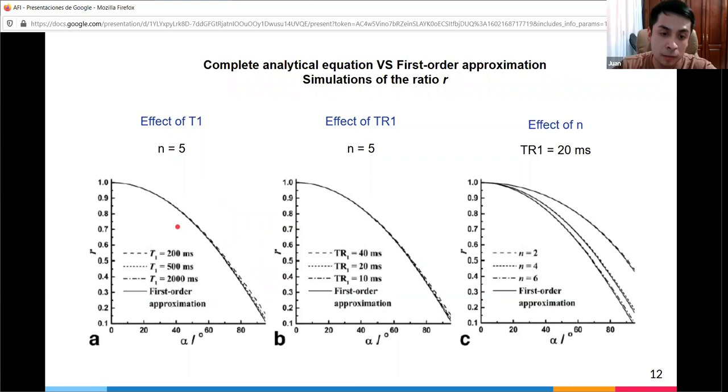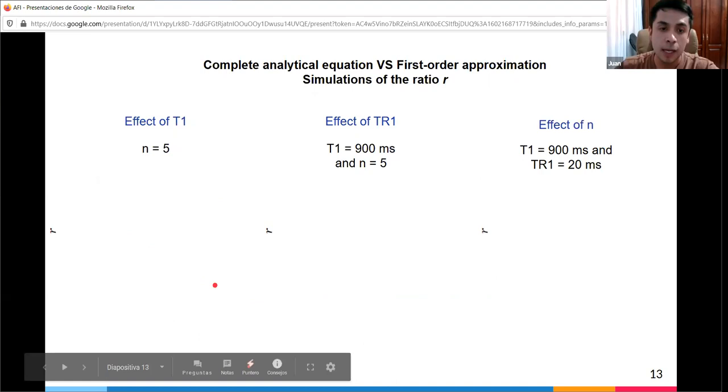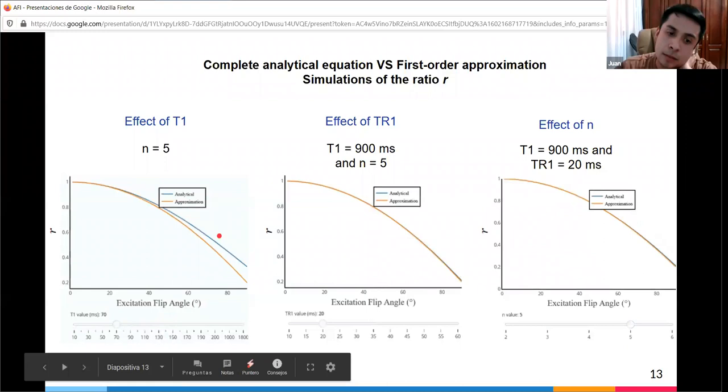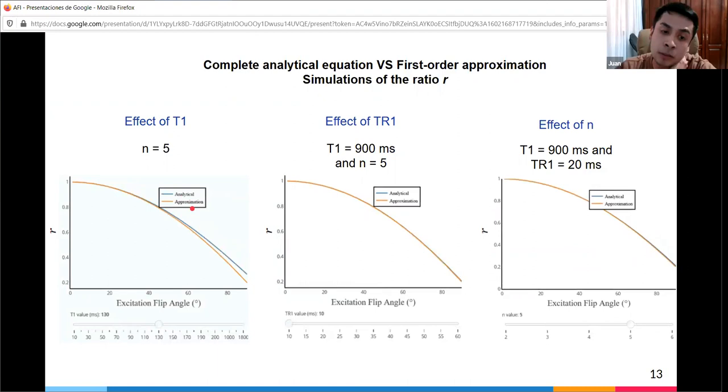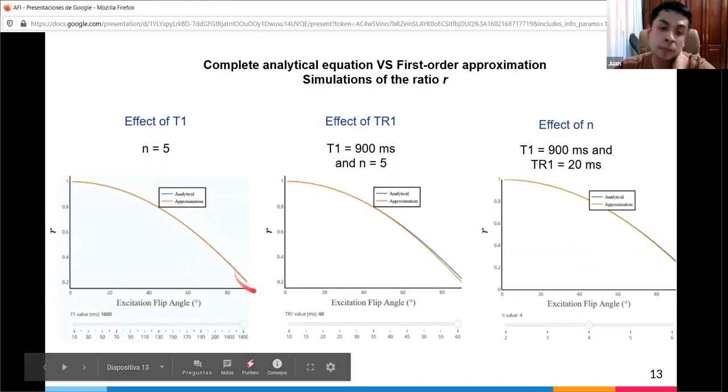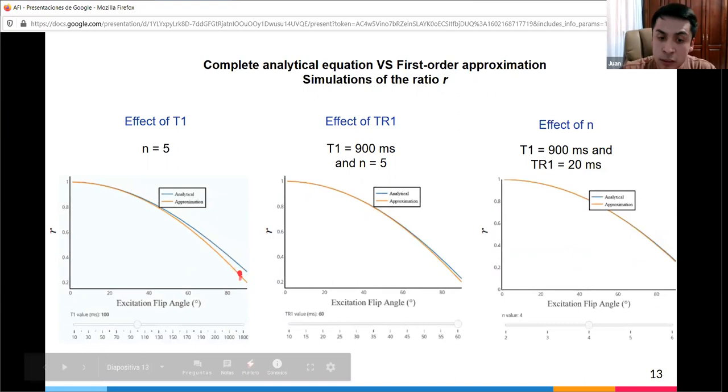These are the plots from the original paper. They made them interactive to show more than 3 T1 values. Here the user can change the relaxation time T1 value. Notice large differences between the analytical (blue) and approximation (orange). These differences are more pronounced for short T1 values and high excitation flip angles. AFI is considered T1 insensitive to a wide range of T1 values because after 200 milliseconds, there's only slight deviation at high excitation flip angles.